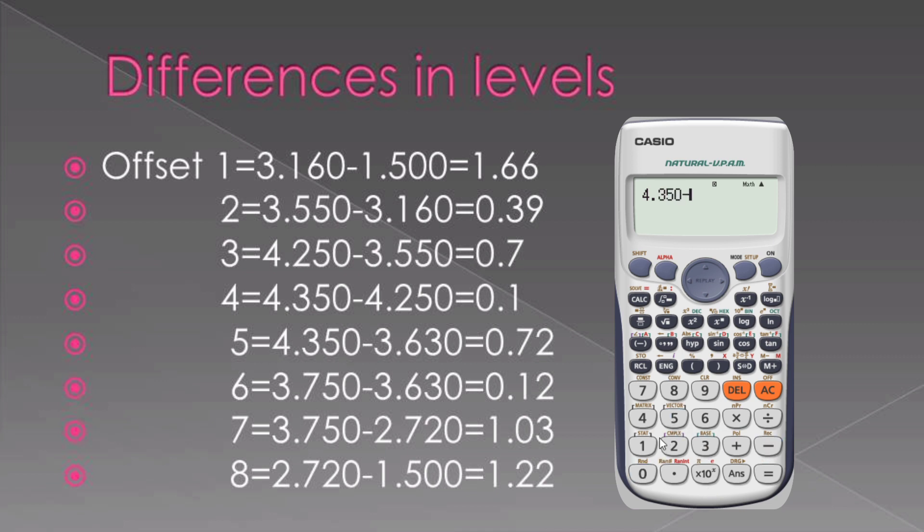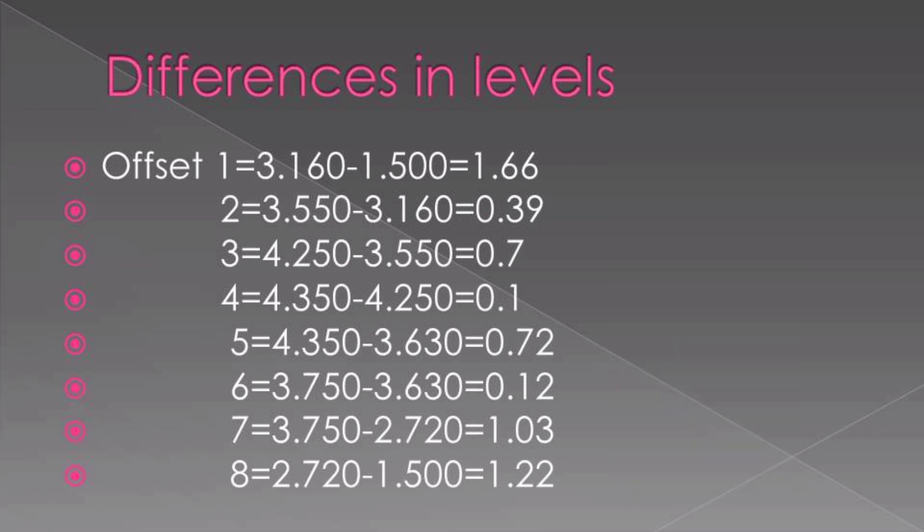After moving from that point, by the looks of our data, 4.25 and our next point is 4.35, the difference between those two points will give me the elevation of that land and that elevation becomes 0.1. After that our terrain starts to rise. We move from that point, that is 4.35, to higher ground that is 3.630. The differences between those two points will give me the elevation of the land.